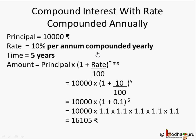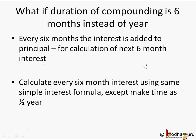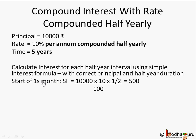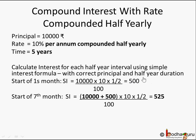Now, what if the duration of compounding is 6 months instead of a year? This means every 6 months the interest is added to the principal for the next 6 months' simple interest calculation. On a half-yearly basis: same principal 10,000, same 10% per annum, compounded half-yearly, time = 5 years. For the first 6 months, the interest is 10,000 × 10 × (1/2) / 100 = 500 rupees.